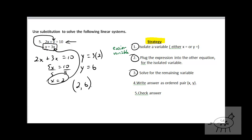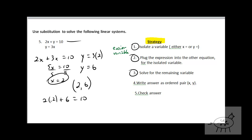And if I want to check it, I plug back into the original equations. If I plug into the first one: 2 times 2 plus y, which is 6 — does that equal 10? Well, 2 times 2 is 4, and 4 plus 6 equals 10. Yes, 10 equals 10. And for the next one, y equals 3x — plug 6 in for y and 2 in for x: 6 equals 3 times 2. So we get 6 equals 6. That's a good way to check your work.